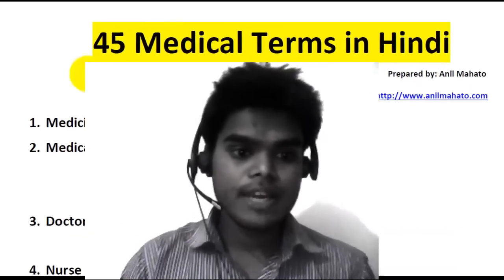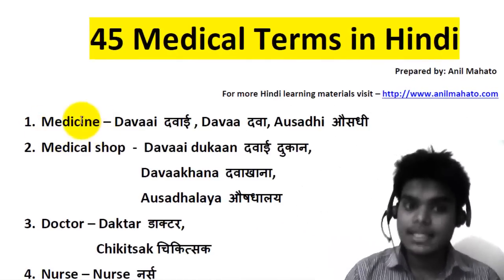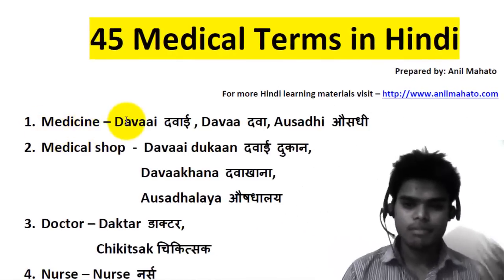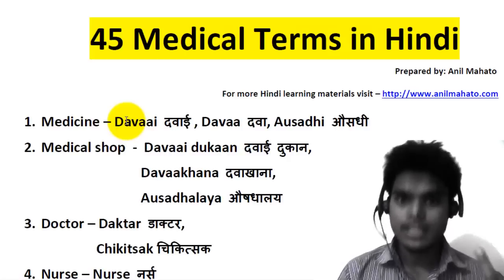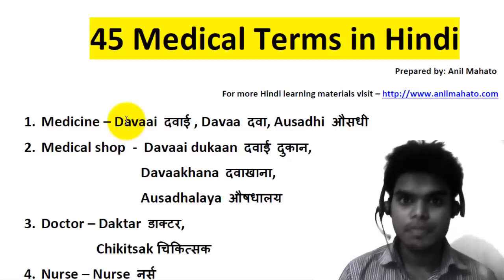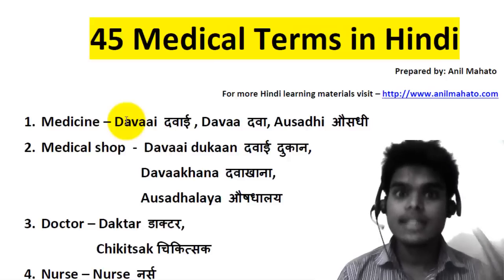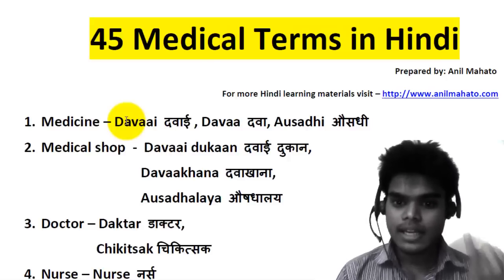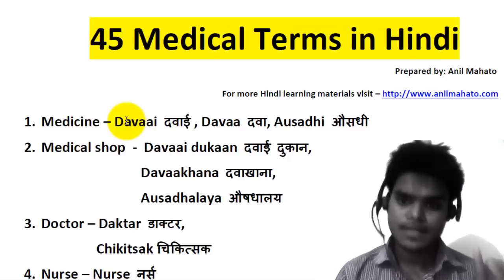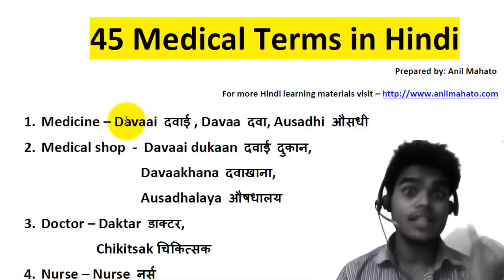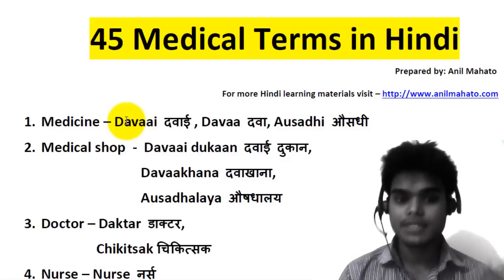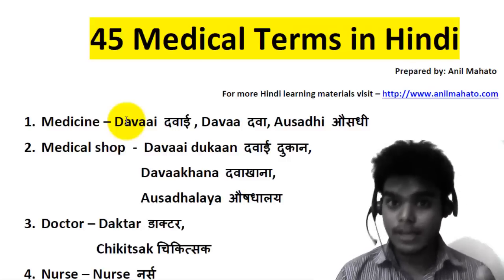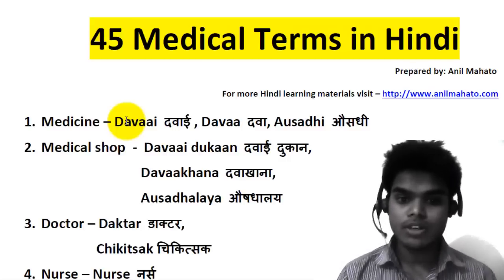The first vocabulary word is 'medicine.' In Hindi we mostly use three words: first one is 'davai,' next one is 'dava,' and another one is 'aushadhi.' Aushadhi is used a little less but is also very correct. So: davai, dava, aushadhi — all three.